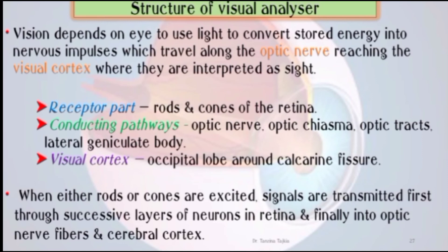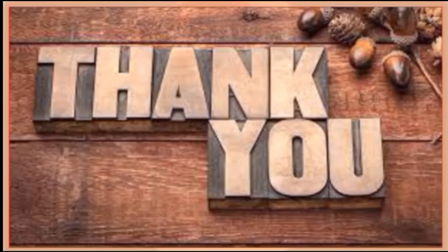Vision depends on the eye using light to convert stored energy into nerve signals, which travel along the optic nerve and reach the visual cortex where they are interpreted as sight. The receptor parts are the rods and cones. The conducting pathway involves the optic nerve, optic chiasm, optic tract, lateral geniculate body, and finally the visual cortex in the occipital lobe around the calcarine fissure. When rods and cones are excited, signals are transmitted through successive layers of neurons in the retina, finally to the optic nerves, and then to the cerebral cortex.